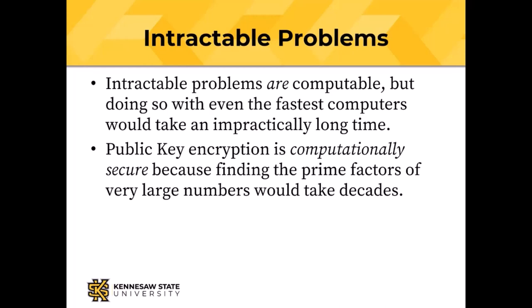Shor's algorithm, which works only on quantum computers, can find the prime factors of large numbers quickly. So in some years, the current brand of public key encryption — things like the RSA algorithm — are going to disappear with quantum computing. Right now, there are no real quantum computers big enough with enough qubits to run Shor's algorithm. But elliptic curve encryption is quantum computing resistant, so we'll still have public key crypto.